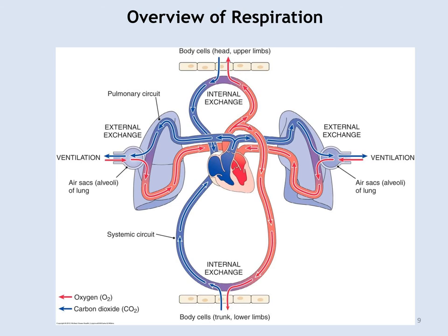Blood is coming out of the right ventricle and into the lungs, into the pulmonary circuit. This is an alveolus with oxygenated blood coming in. CO2 is exchanged out, O2 attaches to the red blood cells, and blood heads back to the left ventricle.